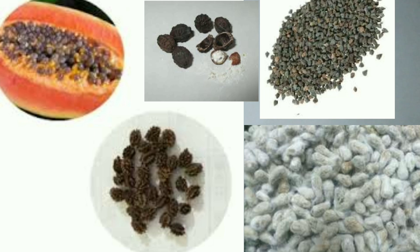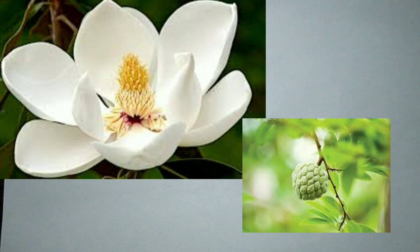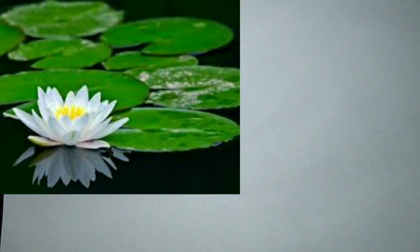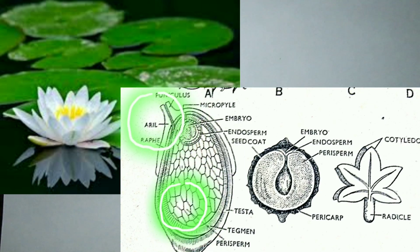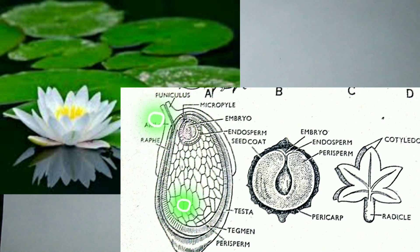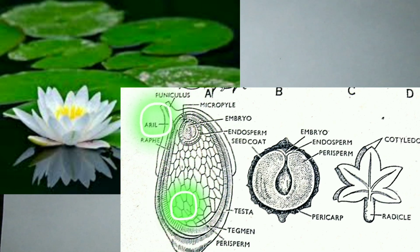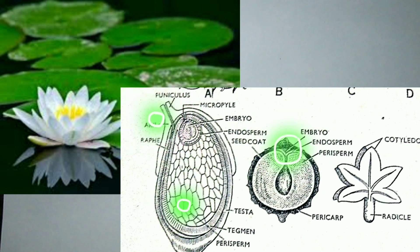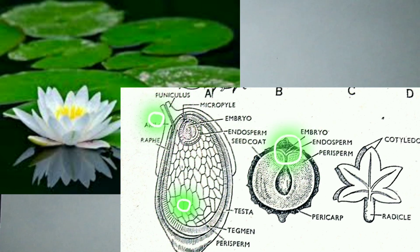Some whole families show this type of seed, such as Magnoliaceae and Annonaceae. The family Nymphaeaceae shows perisperm and aril in addition to the endosperm. In the water lily of this family, the testa and tegmen surround a mass which is the perisperm; inside it at the pointed end is the minute embryo embedded in a small endosperm. The raphe is prominent.